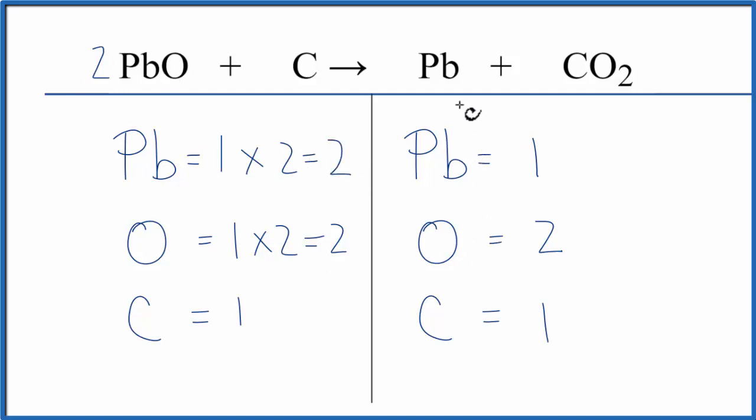That's not too bad to fix, though, because Pb's all by itself. If I put a coefficient of 2 in front of the Pb, 1 times 2, that would give me 2 lead atoms, and those are balanced, and the equation's balanced.